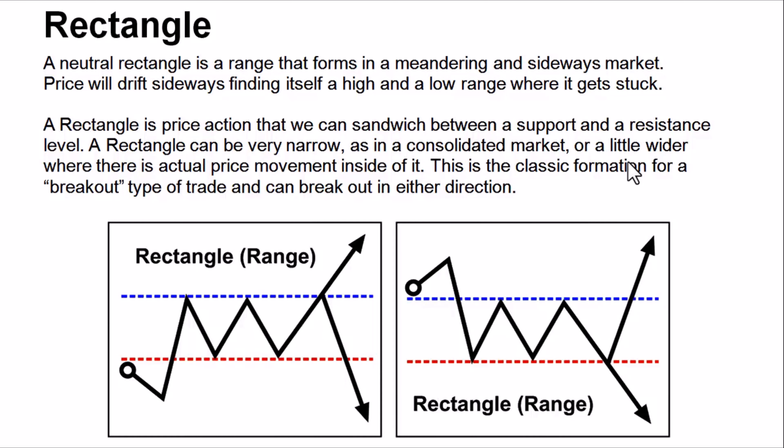We all know what support and resistance levels are. If you don't, check out my playlist on the channel where I talk about support and resistance zones and how to identify them on an actual chart. The rectangle can be very narrow. In a consolidating market, a slightly wider price range can be formed where the market tends to hit the resistance or support area and come back.